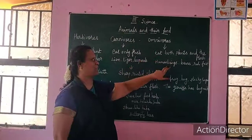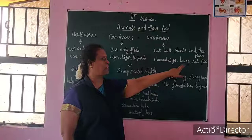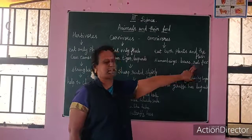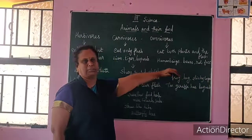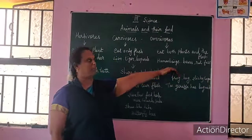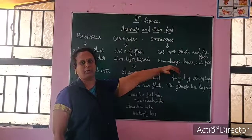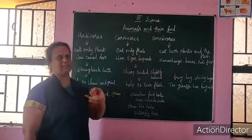Omnivore animals eat both plants and flesh. Examples are human beings, bears, rats, and fox. They eat both plant roots and fresh flesh. That is the omnivorous animal.